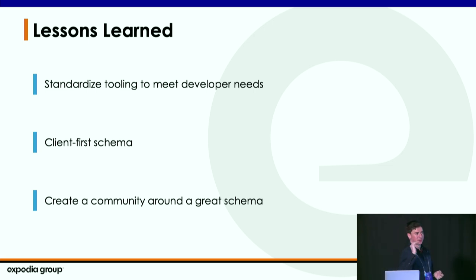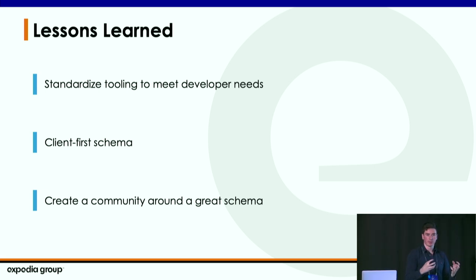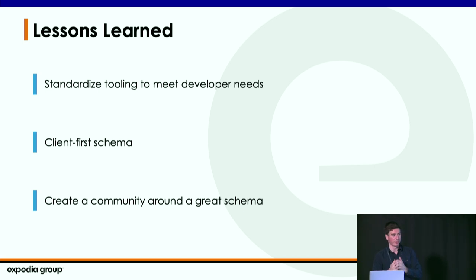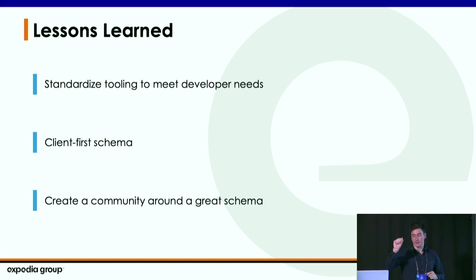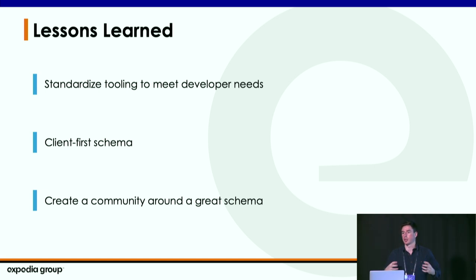If you were to take anything away from this talk, the three things we found valuable at Expedia Group in our GraphQL migration: first, standardize the tooling to meet developer needs. GraphQL doesn't directly benefit your customers — the customer doesn't care if you use GraphQL or REST — but GraphQL builds better developer experiences. If your developers work better, they can build features faster, which benefits your customers. Second, build a client-first schema designed well and powered for clients. Third, create a community around schema creation — the communication load across teams is too much for a single team of schema managers to handle alone.